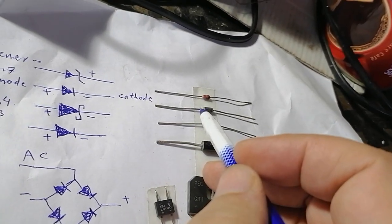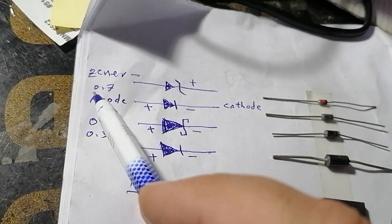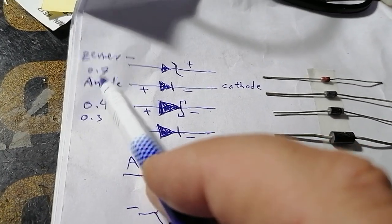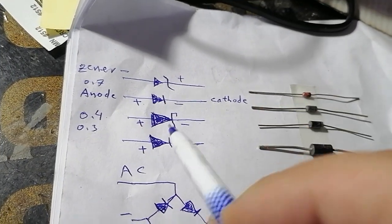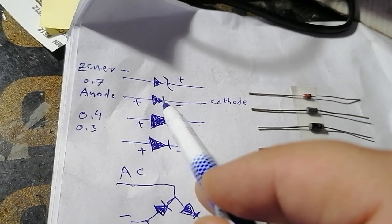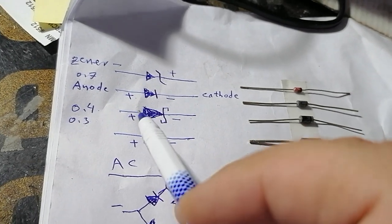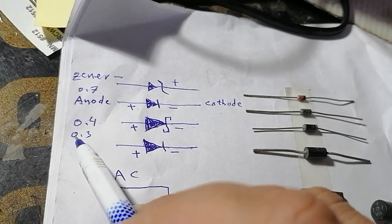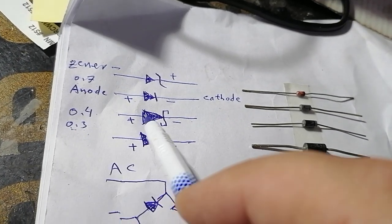The operating voltage for a germanium diode will be about 0.7 volts — the minimum voltage to open the gate for this diode. For the Schottky diode, it works the same as germanium but the operating voltage will be about 0.3 or 0.4 volts to open the gate.